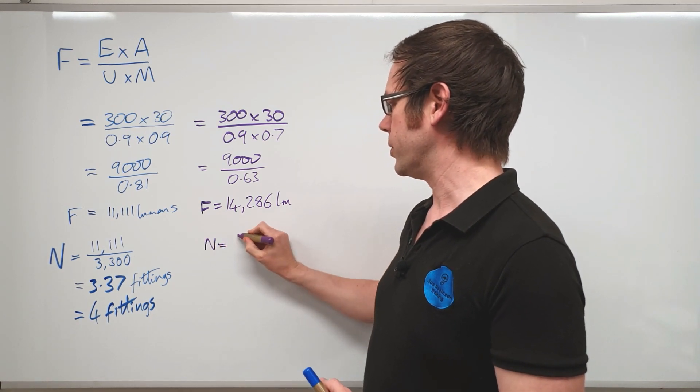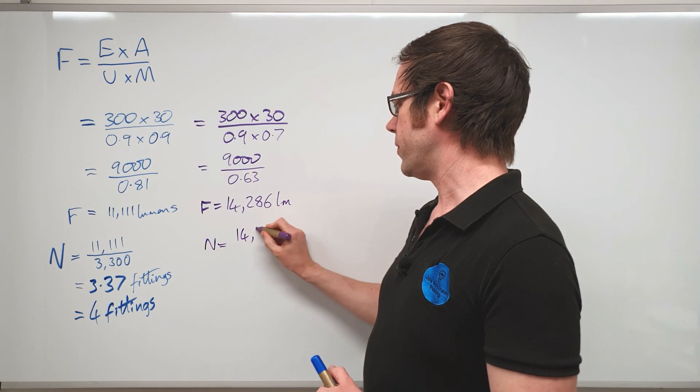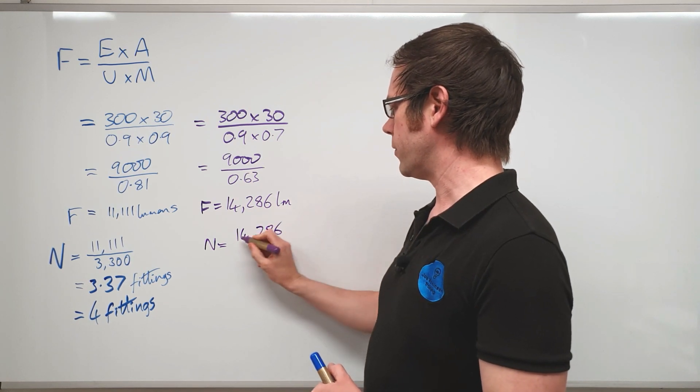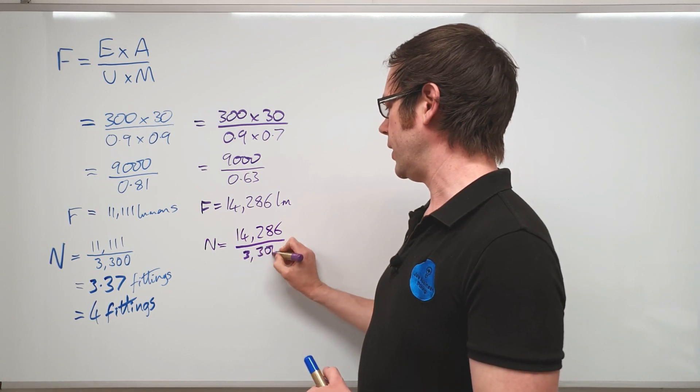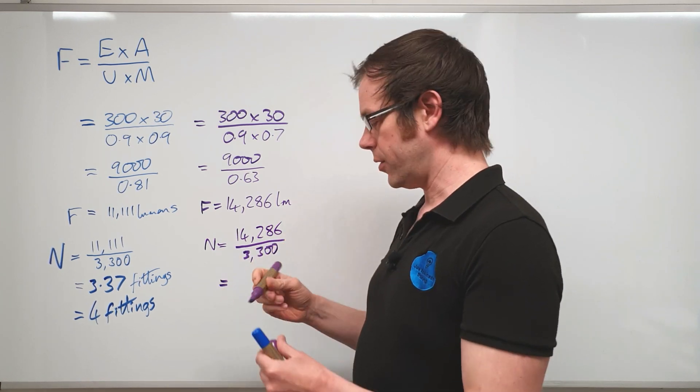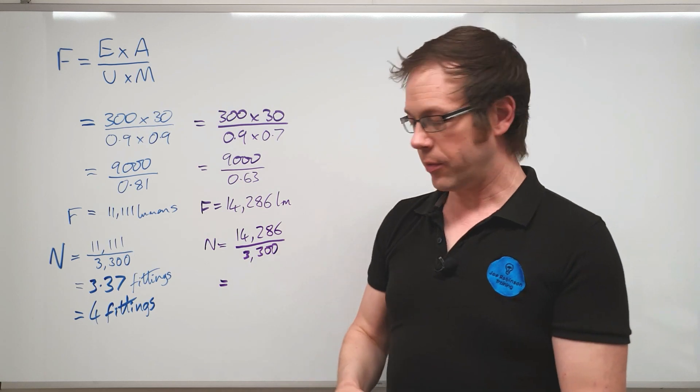So let's apply the same principle to this value of luminous flux and say that the number of fittings will be equal to the luminous flux that's required to illuminate the space, so 14,286, divided again by that value of 3,300.